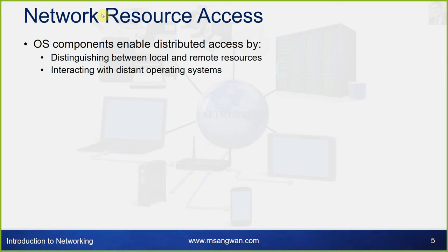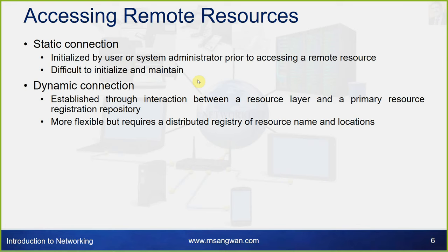Network resource access: OSI components enable distributed access by distinguishing between local and remote resources and interacting with distant operating systems. There are two ways to access a remote resource: static connection and dynamic connection. A static connection is initialized by a user or system administrator prior to accessing a remote resource — it is difficult to initialize and maintain. A dynamic connection is established through interaction between a resource layer and a primary resource registration repository — more flexible, but requires a distributed registry of resource names and locations.